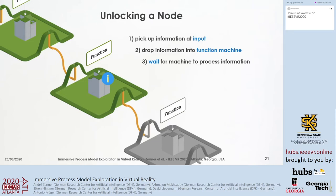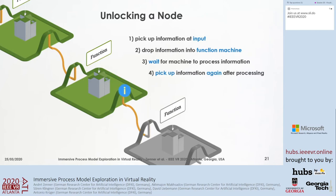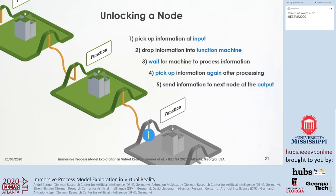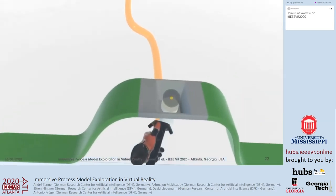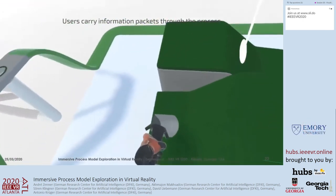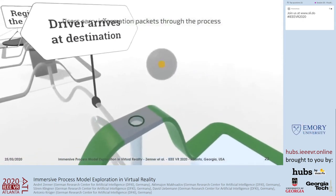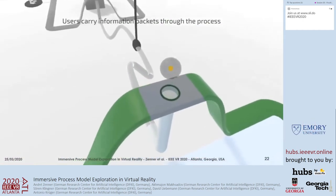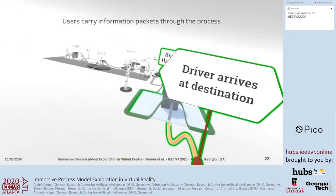The function machine will start processing the information, which takes some time, highlighting that a function represents a real-world activity that also needs some time. While waiting, the user can read more information about the real-world activity on the textual signs. As soon as the information is processed, the user can pick it up and carry it to the output socket, sending it away over the tube system to the following node, which unlocks the following platform. A video showcases a user picking up an information package, dropping it into the function machine, and taking it out again to send it off to unlock the next node.